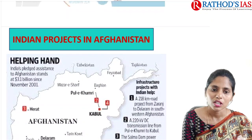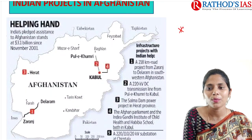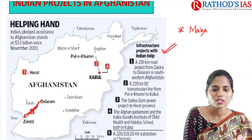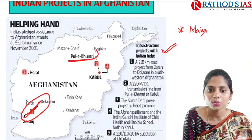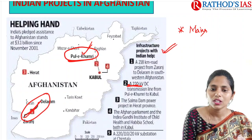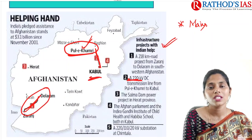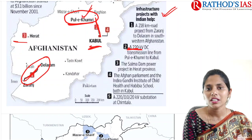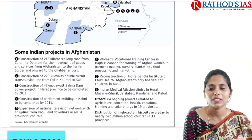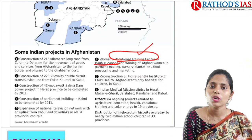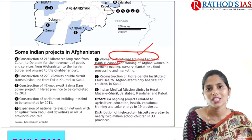Now let us talk about Indian Projects in Afghanistan, which is very important for mains answers. First is the Zaranj-Delaram Highway. In the Pul-e-Khumri area, India developed a 220-kilowatt direct current transmission line connecting Pul-e-Khumri with Kabul. India also set up a vocational training center at Baagh-e-Zanana, where women are given training in garment making, nursery plantation, food processing, and marketing.